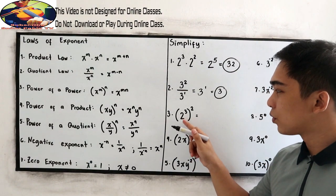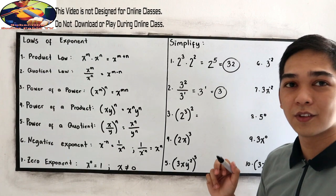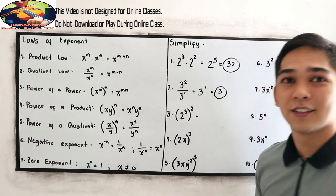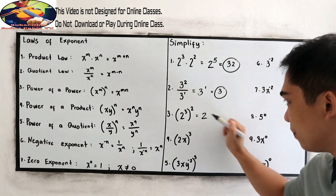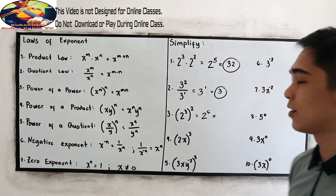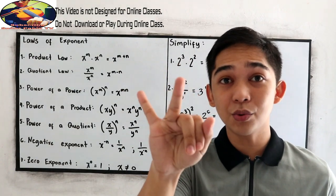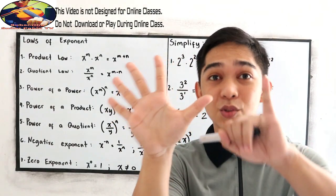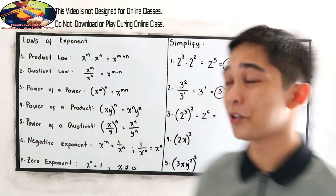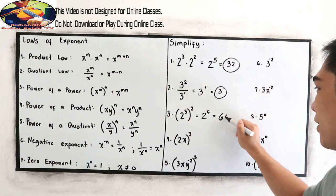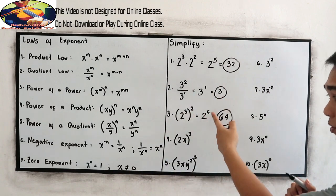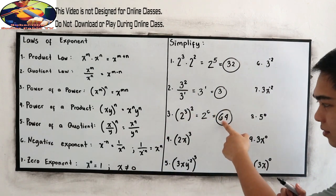Number 3: 2 cubed raised to 3. We apply power of a power — copy the base, which is 2, then multiply the exponents: 3 times 2 equals 6. So 2 times 2 times 2 times 2 times 2 times 2 gives us 64. Note that 2 raised to 5 is 32, times 2 gives 2 raised to 6, which equals 64.